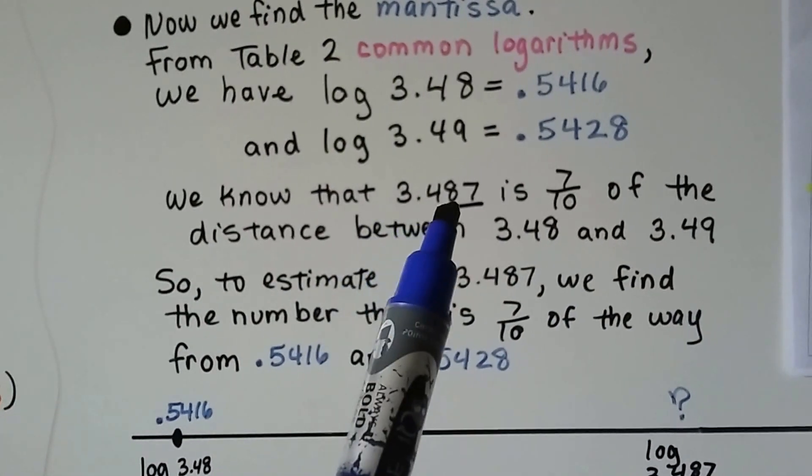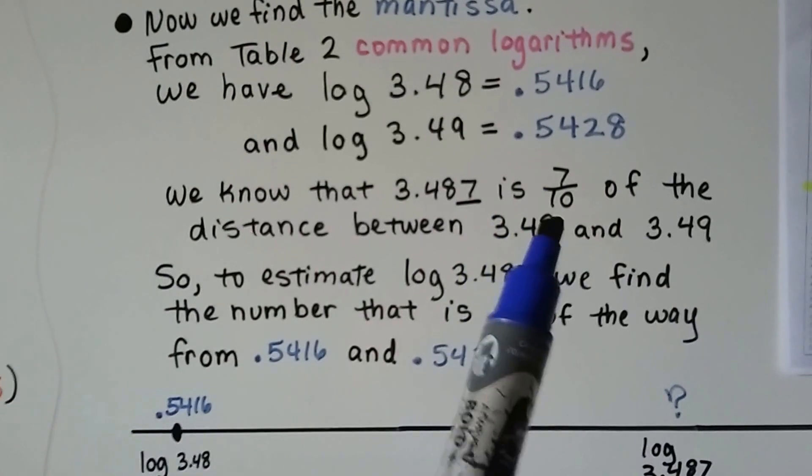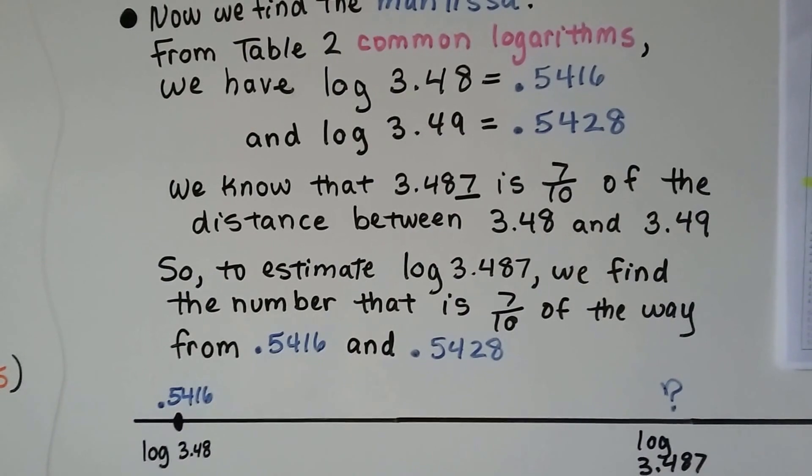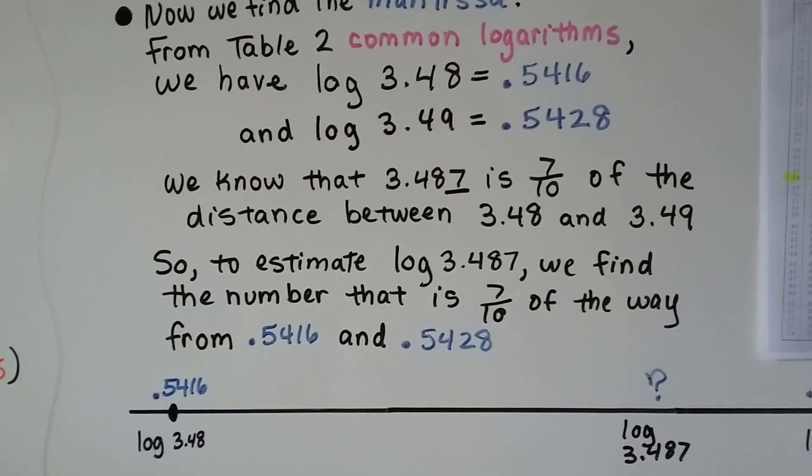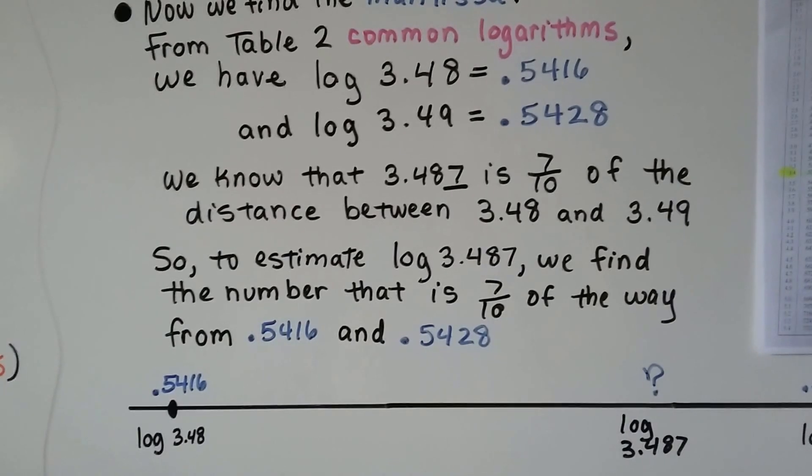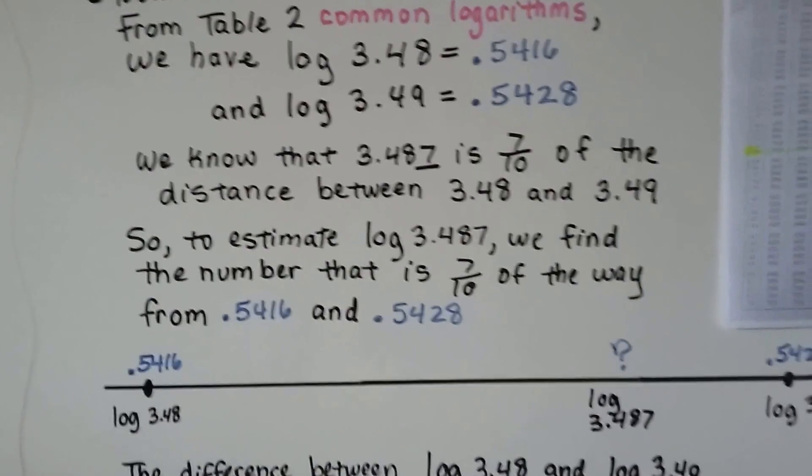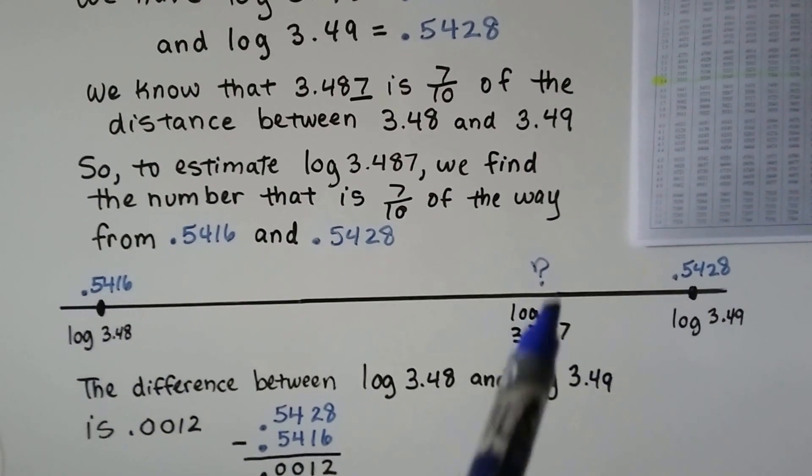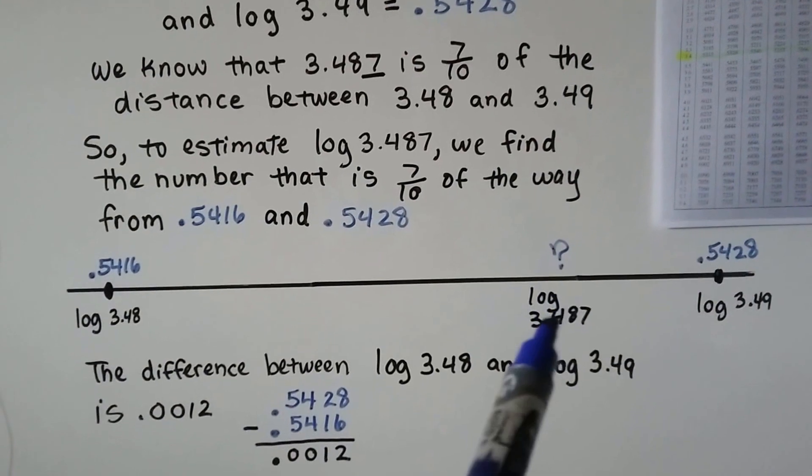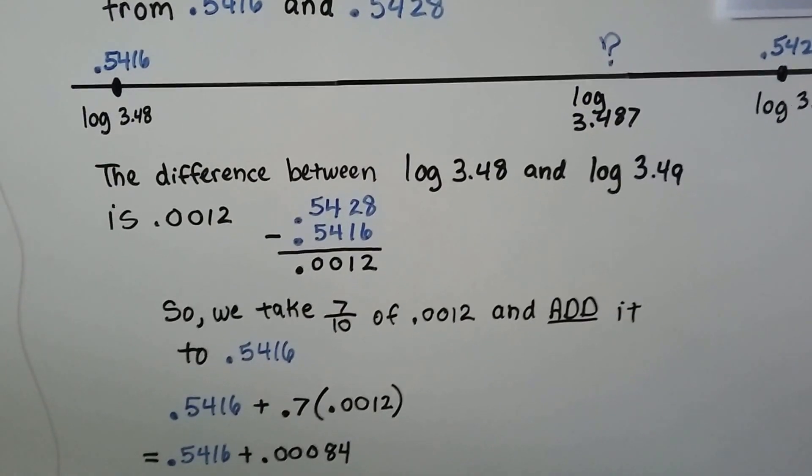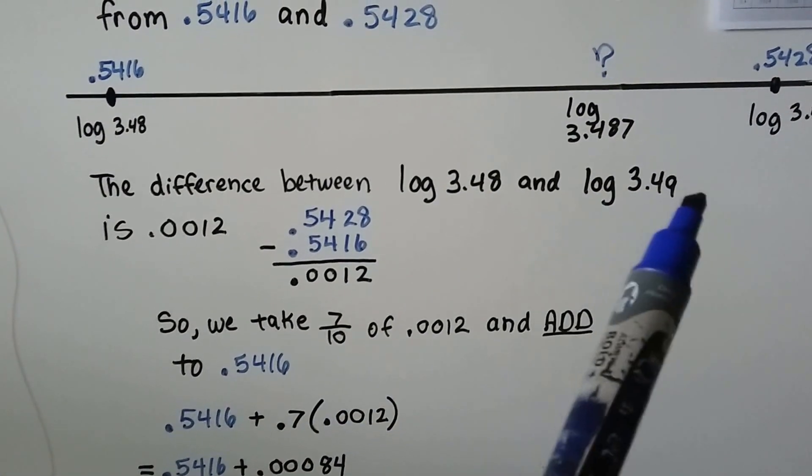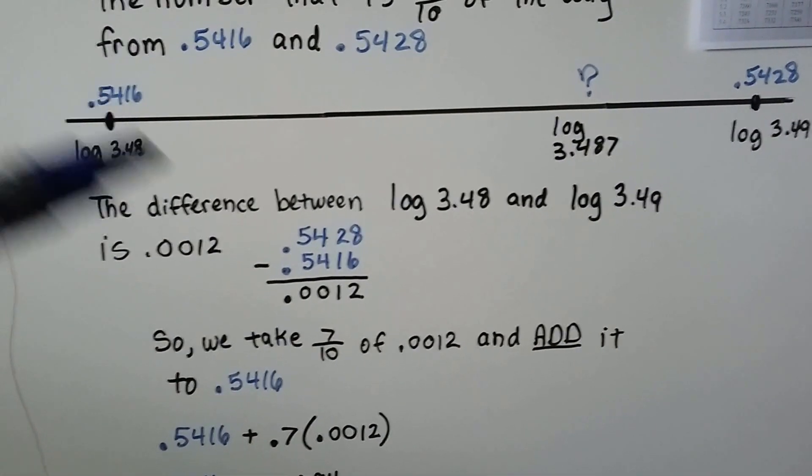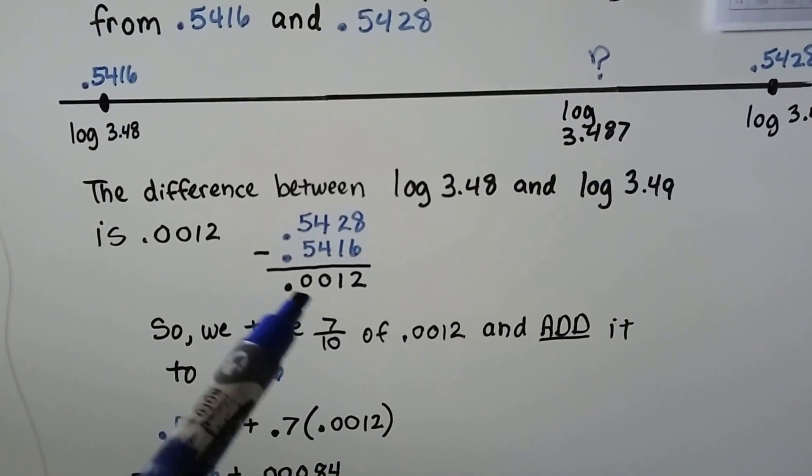We know that 3.487 is 7 tenths of the distance between 3.48 and 3.49. That 7 tells us that. So to estimate log 3.487, we find the number that's 7 tenths of the way from 0.5416 to 0.5428. We're going to get the difference between 3.48 and 3.49. It's 0.0012. We take this number away from that number and find the difference.